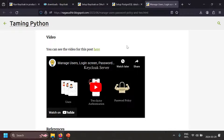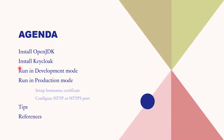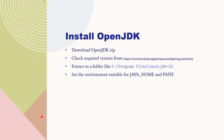First we're going to install OpenJDK and install Keycloak. Then we'll quickly show how to run Keycloak in development mode, and then see what needs to be done to run it in production mode — basically you need to configure the hostname and certificate. You can also configure which HTTP or HTTPS port Keycloak runs on. Finally we'll go through some tips and references for further reading in the official documentation.